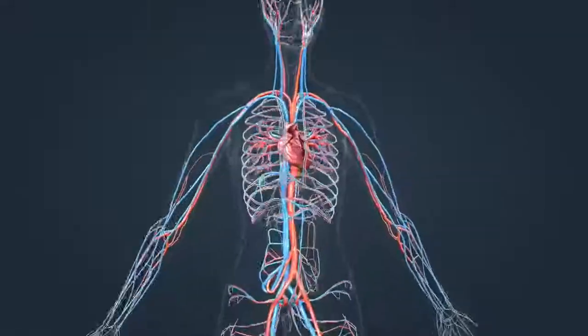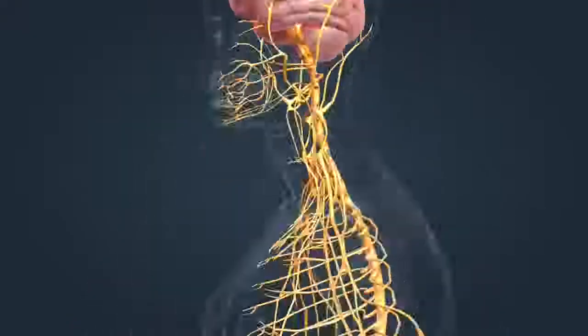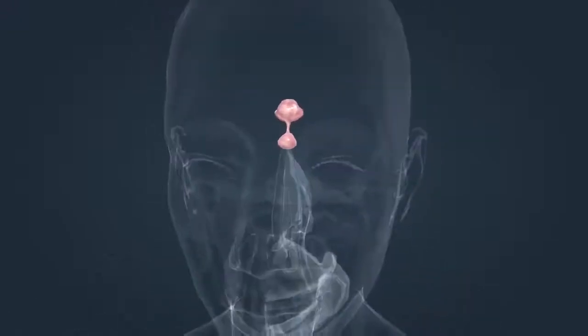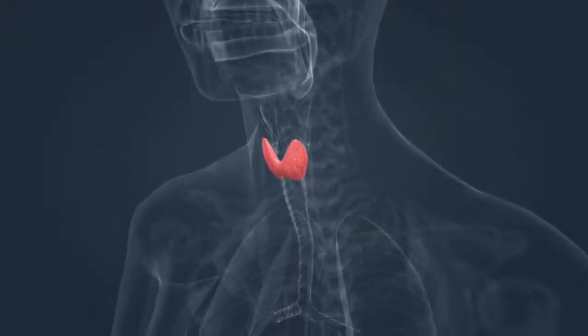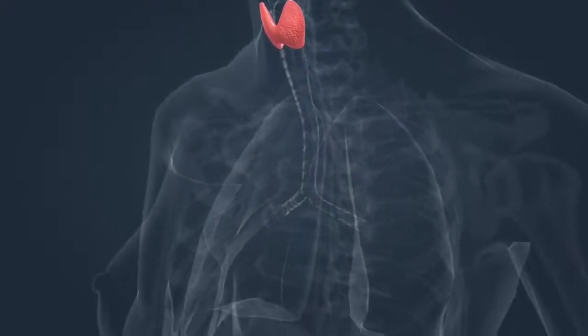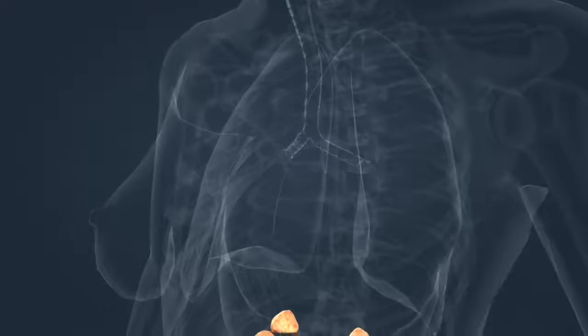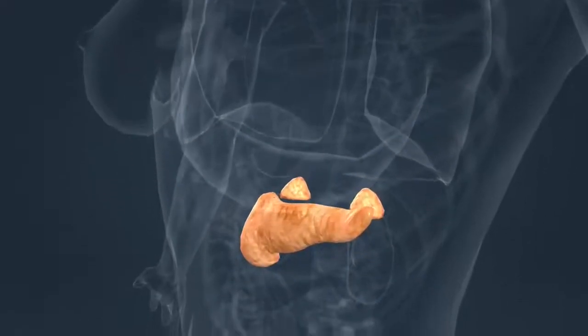The pituitary gland produces proteins and other hormones. These hormones stimulate other endocrine glands: the thyroid gland, the adrenal gland, and the reproductive glands. The pancreas is not regulated by the hypothalamic-pituitary axis.